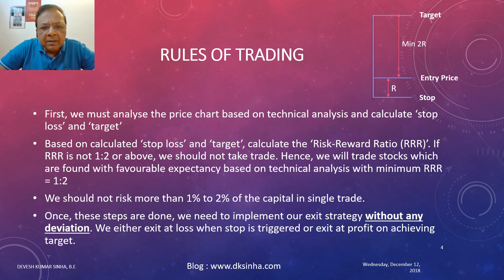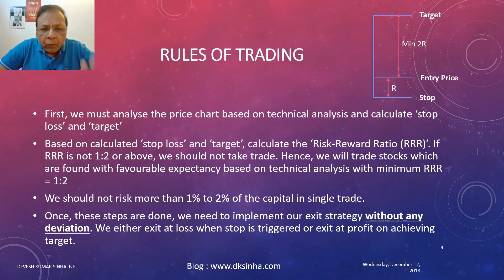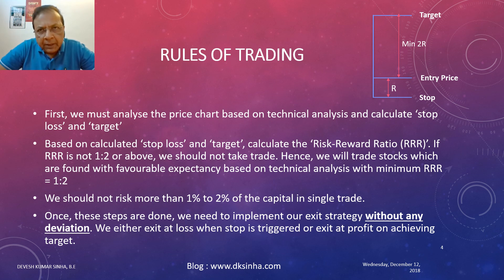The third step is that we should not risk more than 1% to 2% of the capital in a single trade. We will look into this aspect with an example and calculations in a subsequent slide. Once these calculations are done, we need to implement our exit strategy without any deviation — that means we either exit at a loss when the stop loss is triggered or exit at a profit when the target is achieved. In only these two conditions we make an exit, rather than deciding exit and entry on the basis of emotions and gut feeling.